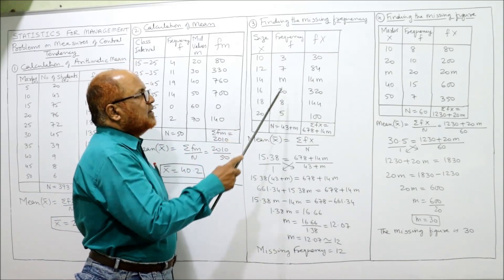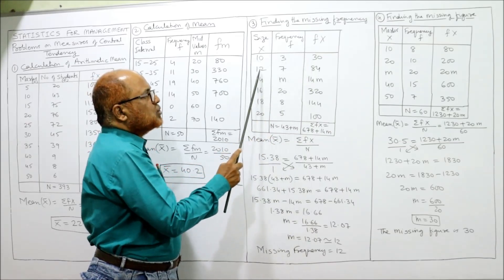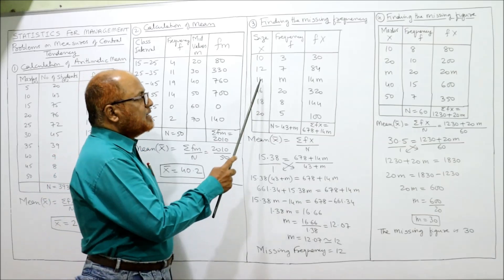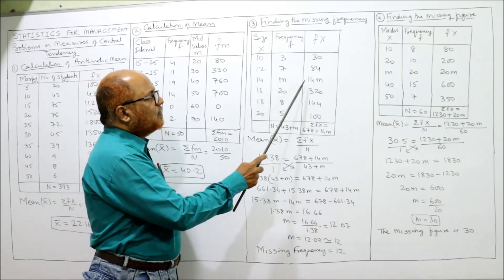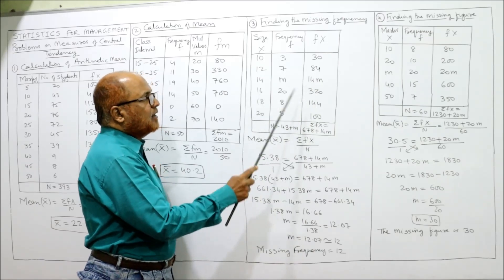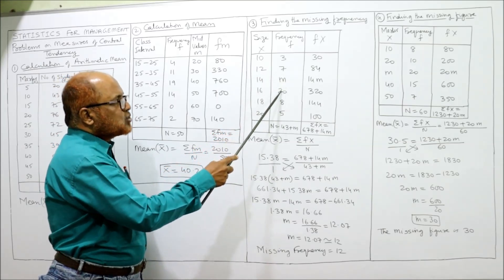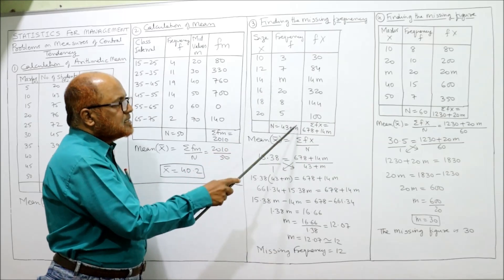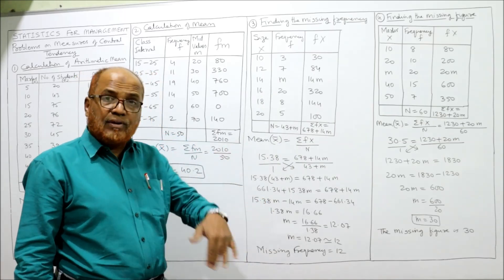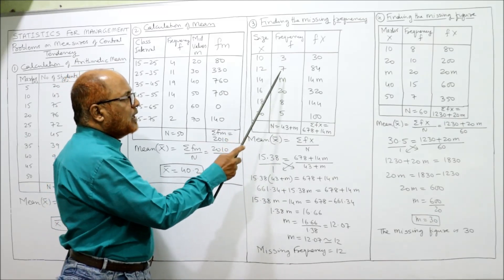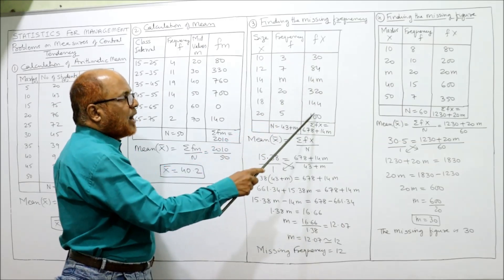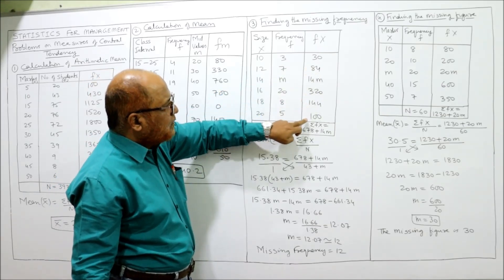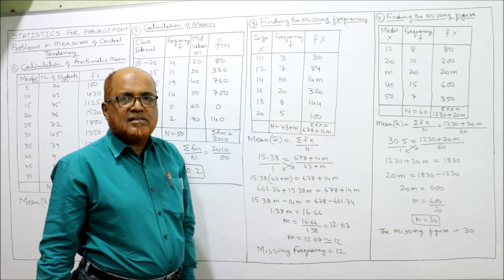Now multiply F × X: 10 × 3 = 30, 12 × 7 = 84, 14 × M = 14M, 16 × 23 = 368 (approximately), continuing to get 140 and 400 for the remaining values. Adding all constant terms of the frequency column gives 43 + M. Adding all constant FX values except 14M gives 678, so ΣFX = 678 + 14M.